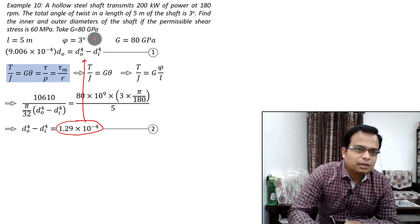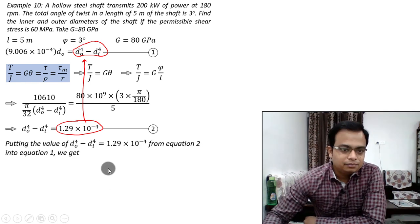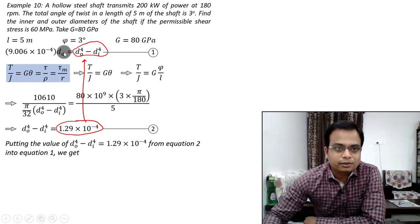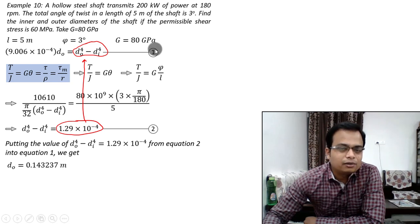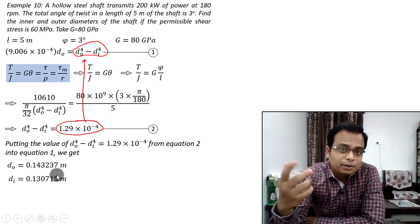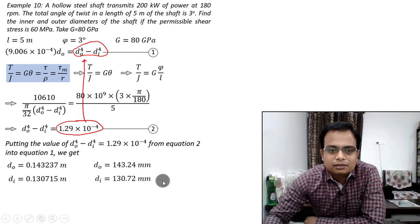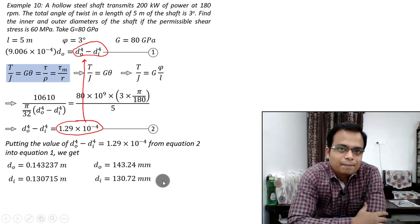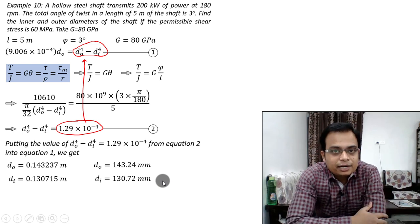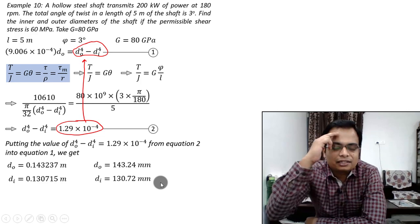Now it's simply mathematics. Plug the value of D_o⁴ − D_i⁴ from Equation 2 into Equation 1. Solve for D_o — the outer diameter. Then substitute D_o back into either equation to get D_i — the inner diameter. The values come out in meters, so multiply by 1000 to convert to millimeters. These are the final answers. So those were the two problems on angle of twist calculation. The next video will be based on shafts in series. Until then, take care, have a nice day, keep learning and keep watching.